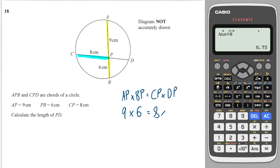And that will equal C to P, which is 8, times by D to P, which is the unknown we're looking for, which is X. So this gives me 54, and that gives me 8X. So X is equal to 54 over 8, which is 6.75. Perfect.